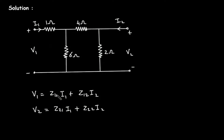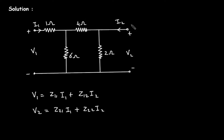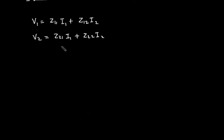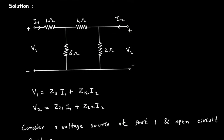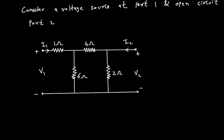First we have to find Z11 and Z21 by substituting I2 = 0. To make I2 = 0, we have to open-circuit port 2. We will consider a voltage source at port 1 and open-circuit port 2. The voltage source has voltage V1, and since port 2 is open-circuited, I2 = 0.